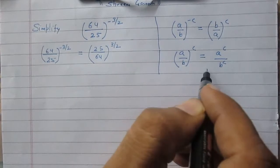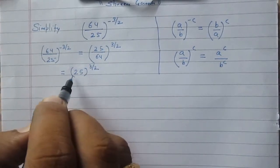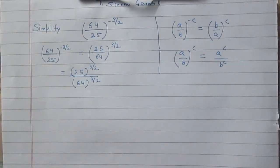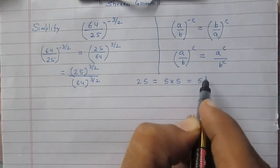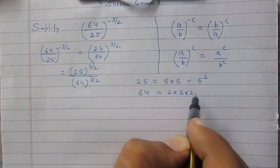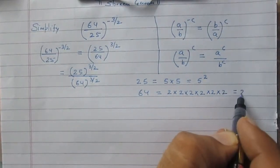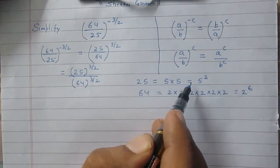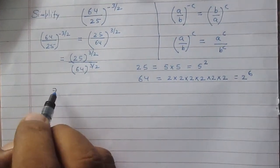Using this rule, we can simplify it as 25 raised to the power 3 by 2, divided by 64 raised to the power 3 by 2. Now 25 is 5 multiplied by 5, so it is 5 raised to power 2. 64 is 2 multiplied by itself 6 times, so it is 2 raised to the power 6. Applying these substitutions, we get 5 raised to power 2, and 2 raised to power 6.